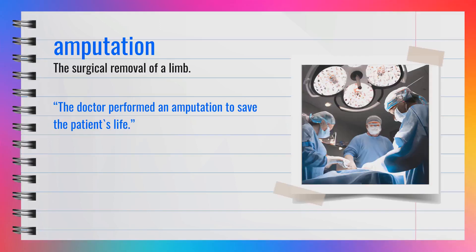The word amputation, spelled A-M-P-U-T-A-T-I-O-N, is a noun. Synonyms include surgical removal and cutting off. For example, the doctor performed an amputation to save the patient's life. In summary, amputation is the surgical removal of a limb.